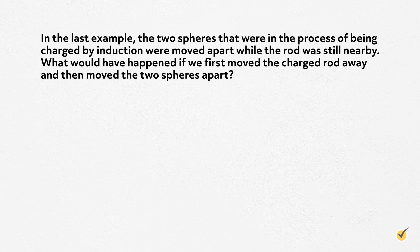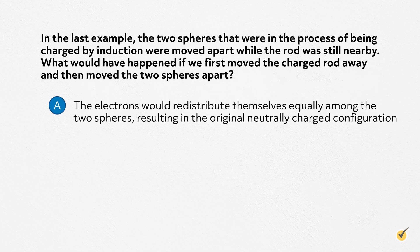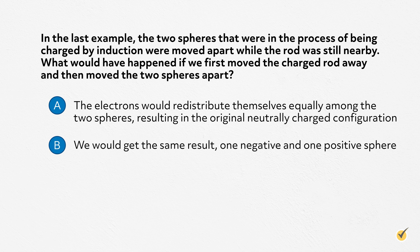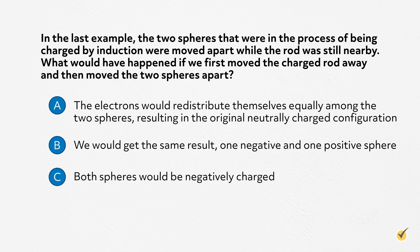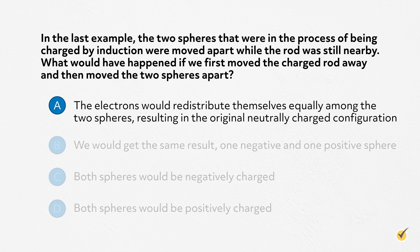Number one. In the last example, the two spheres that were in the process of being charged by induction were moved apart while the rod was still nearby. What would have happened if we first moved the charged rod away and then moved the two spheres apart? A, the electrons would redistribute themselves equally among the two spheres, resulting in the original neutrally charged configuration. B, we would get the same result — one negative and one positive sphere. C, both spheres would be negatively charged. Or D, both spheres would be positively charged. The correct answer is A. The electrons would no longer have anything to attract them when the rod is moved away, and they would redistribute to the neutral configuration before the spheres are moved apart.